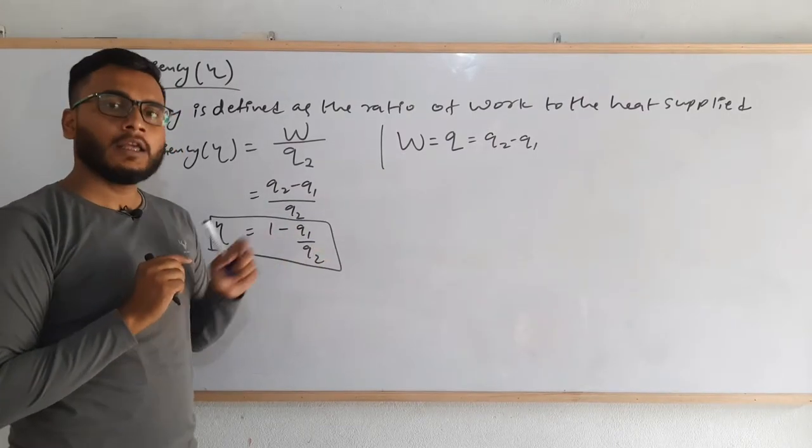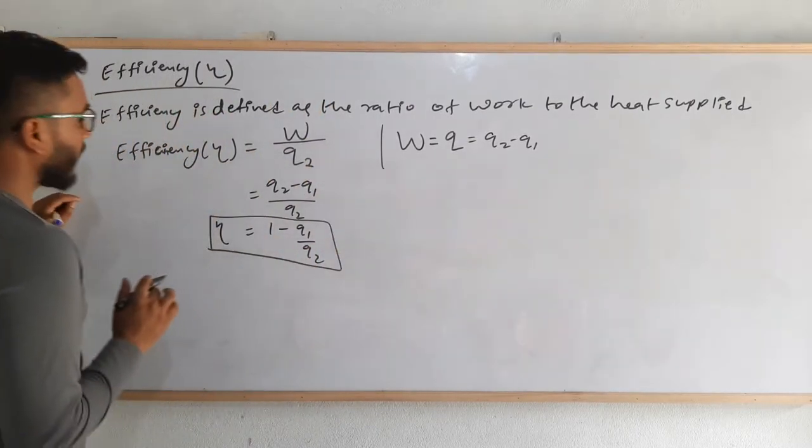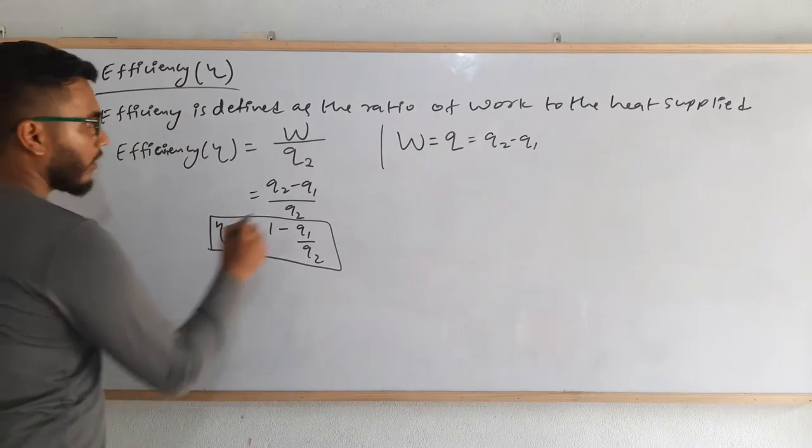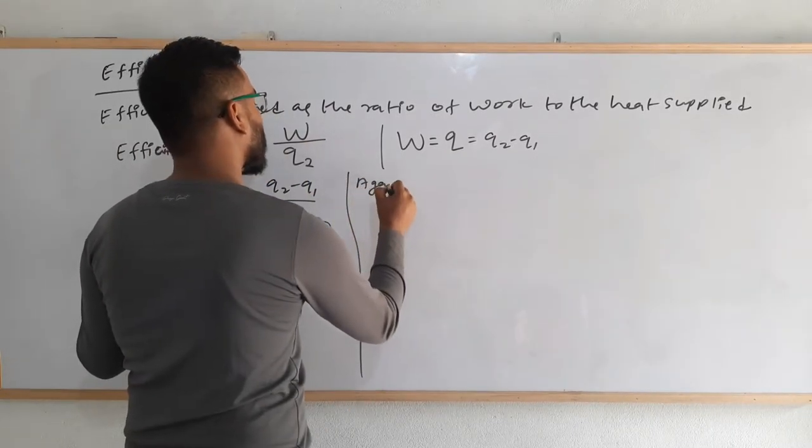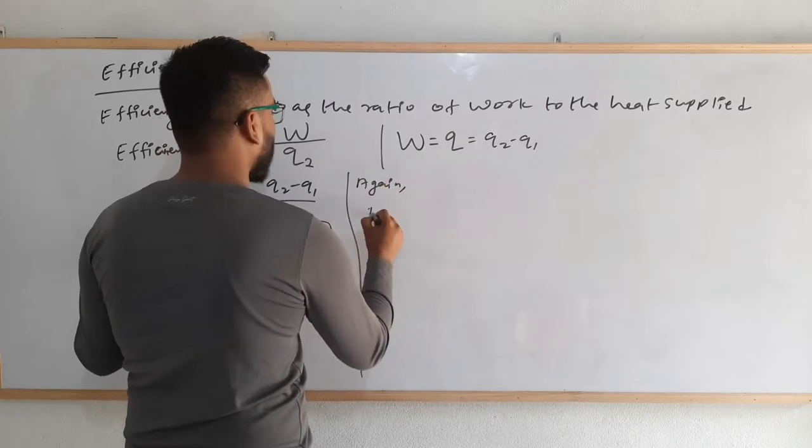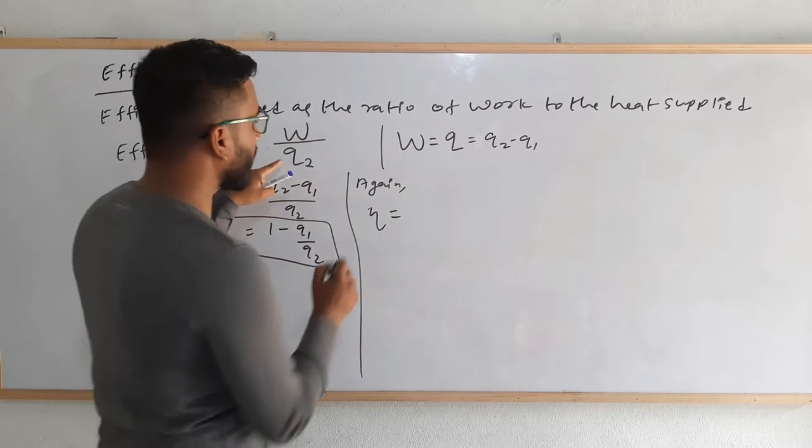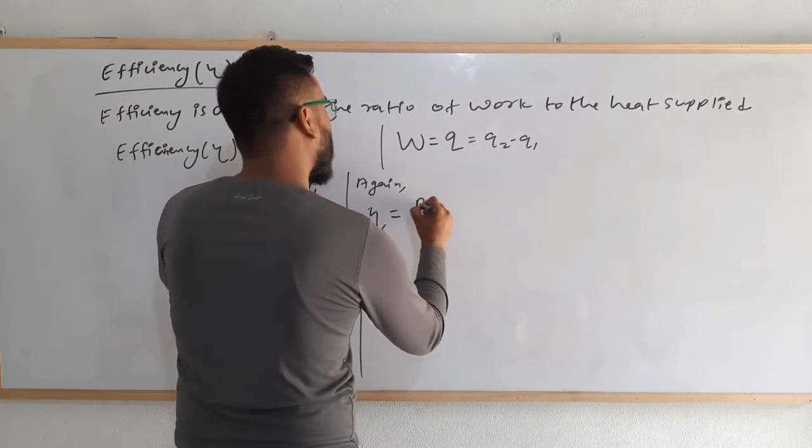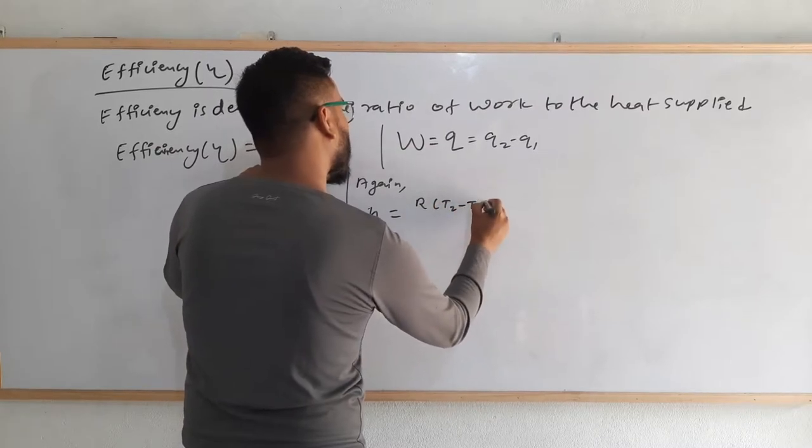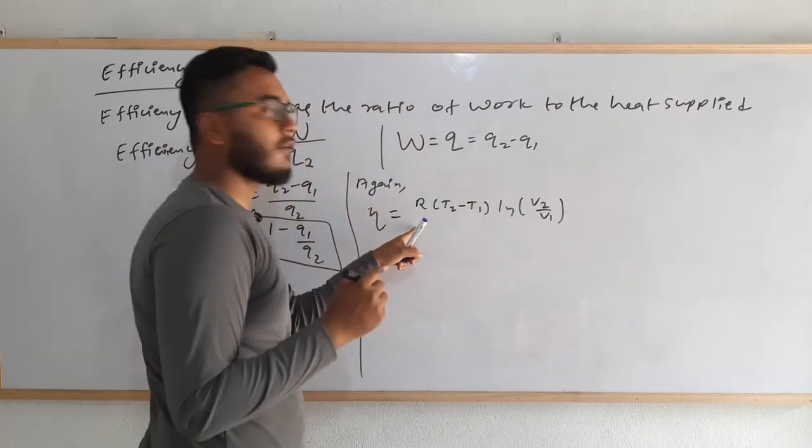There is one more formula that is frequently used to calculate efficiency. Again, since eta is equal to W by Q2, W means R T2 minus T1 ln(V2/V1). This was the formula of W.